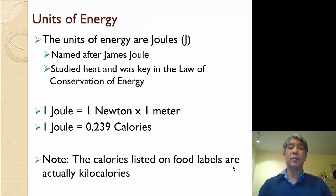First off, the units of energy are joules. Joules are named after James Joule, a Scottish physicist who studied heat and was key in discovering the law of conservation of energy. One joule corresponds to one newton times one meter and to compare to something that we're a little bit more familiar with, one joule corresponds to 0.239 calories. You should be aware though that the calories listed on our food labels are actually kilocalories, so they're really a thousand calories.